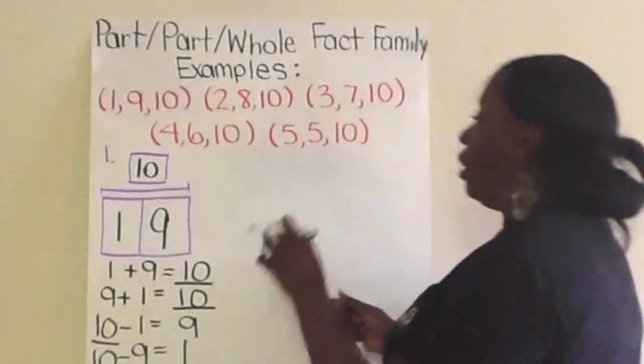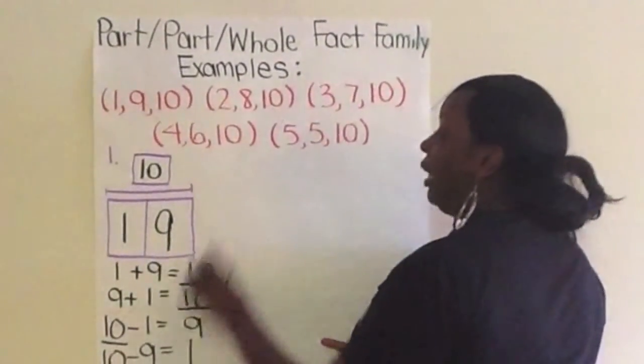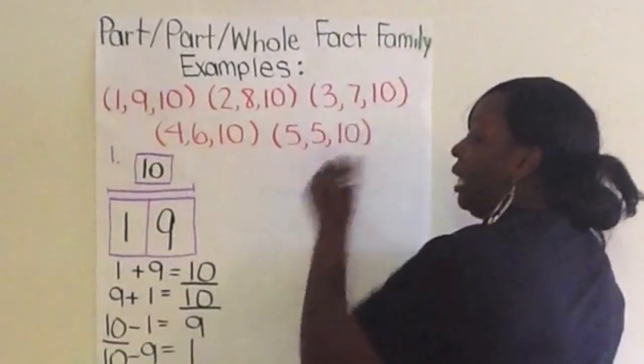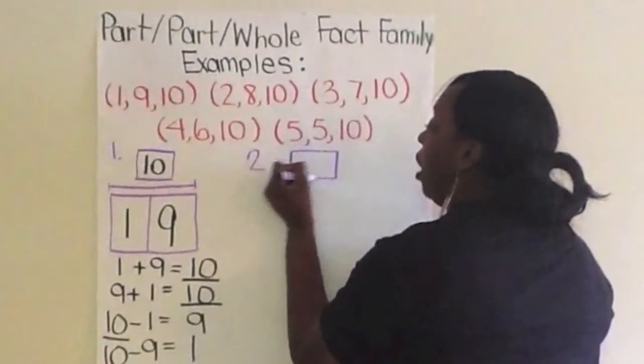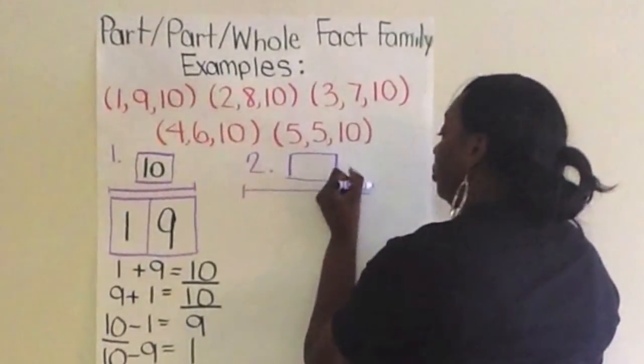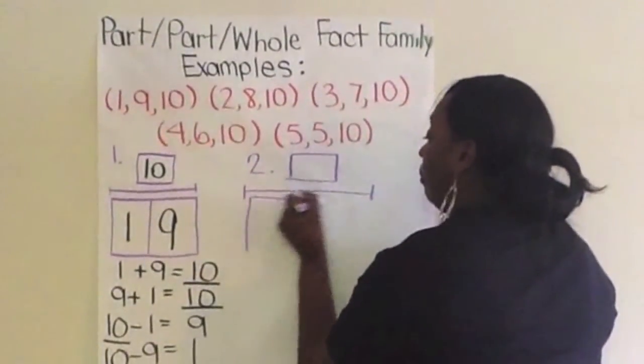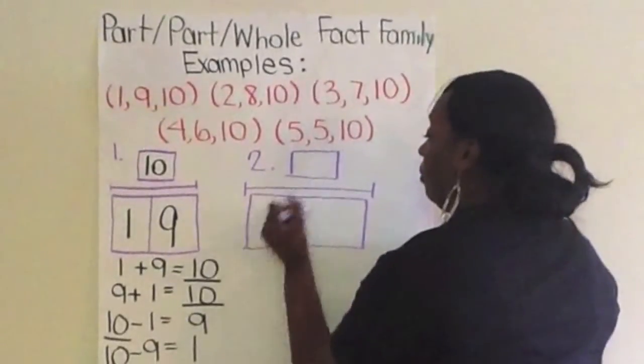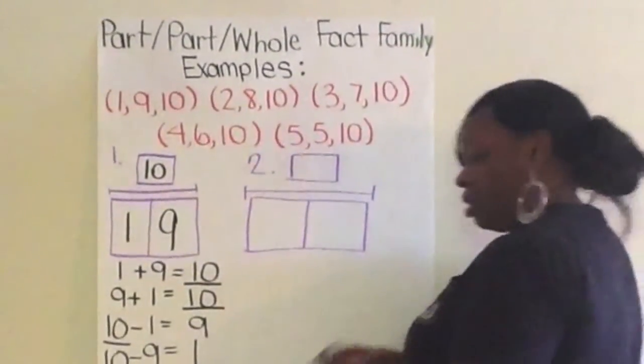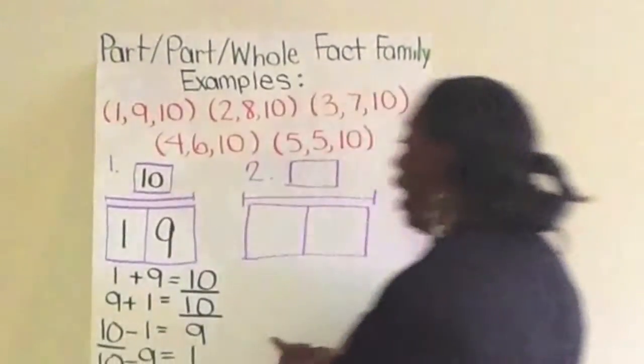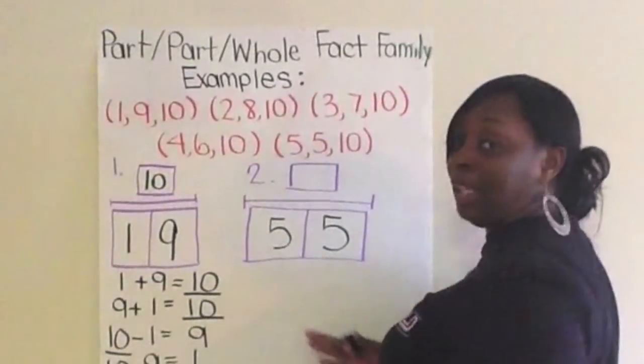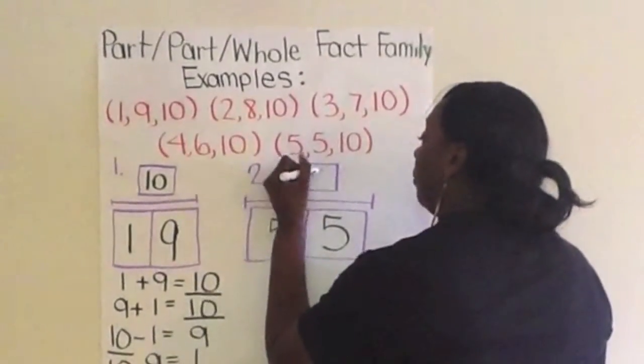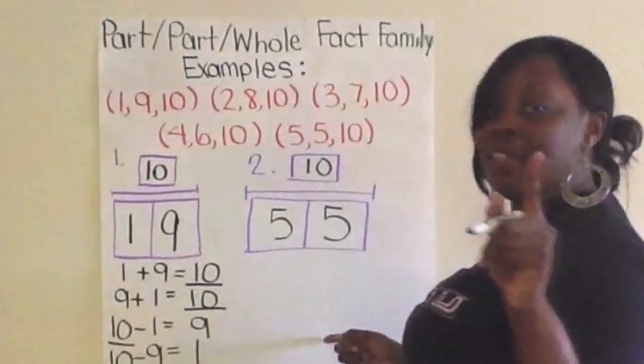So, for example, if the next part, part, whole mat you're making is for 5, 5, and 10. You write number 2. Draw your part, part, whole mat. What are your two parts? That's exactly right. 5, 5. What's your whole number? What are we making? Good job. 10.